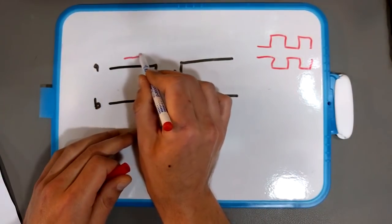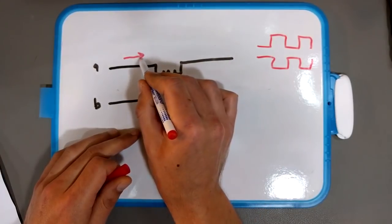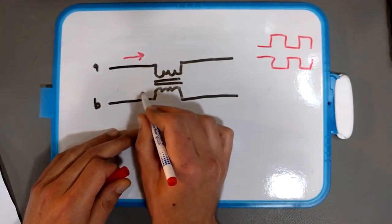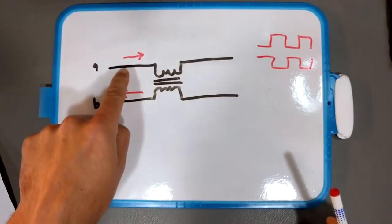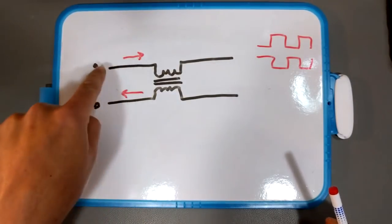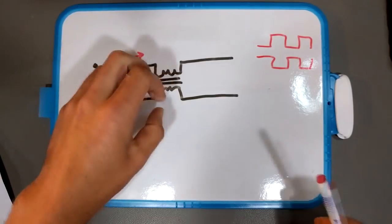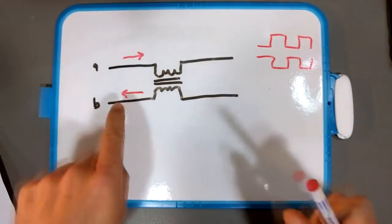And that means you have a current flowing in this direction on wire A and on wire B the current is flowing in the opposite direction. Well that has an interesting effect because as we just said if the current is flowing in this direction that creates this expanding and collapsing magnetic field.